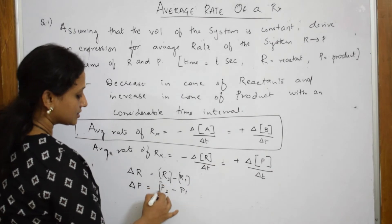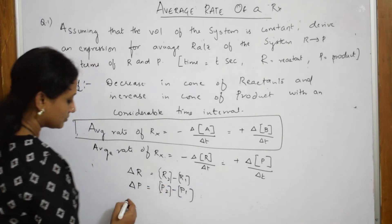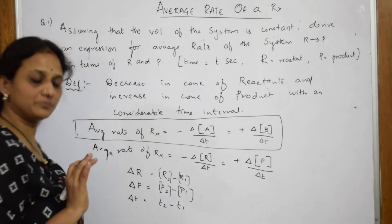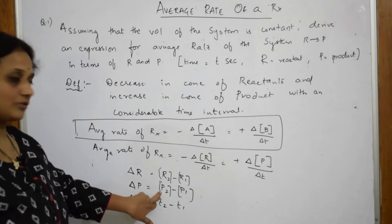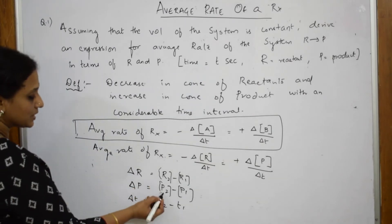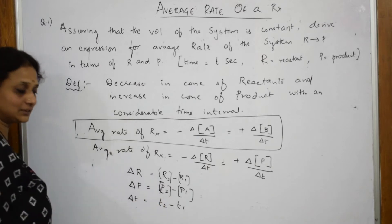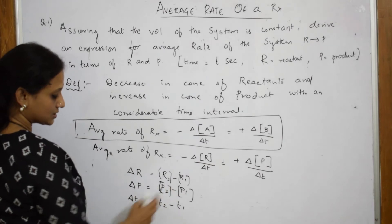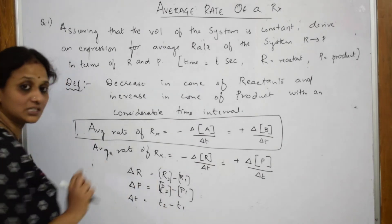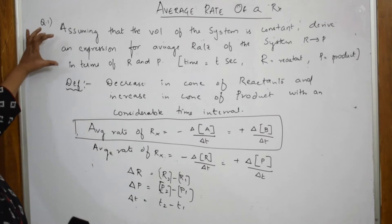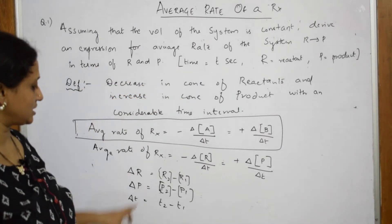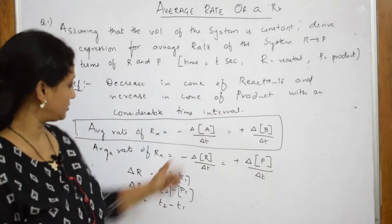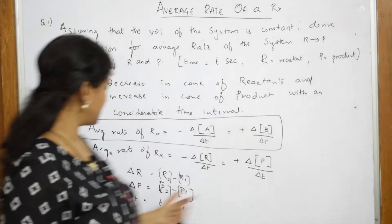Delta T is equal to T2 minus T1. This is the basic equation of your chemical kinetics chapter. So this change in concentration — higher minus lower for product, higher minus lower — and delta T equals T2 minus T1. This is how you write this answer using the terms given: T for time, R for reactant, and P for product.